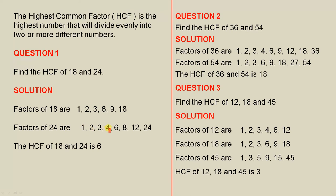The factors of 24 are these numbers here. What we have to do is find the number that occurs in each list and it's the highest number. There's 6 that also occurs there. There's 9 that does not occur here. 18 does not occur there. So the HCF of 18 and 24 is 6, and what that means is 6 is the highest number that will divide into both of those two numbers evenly.